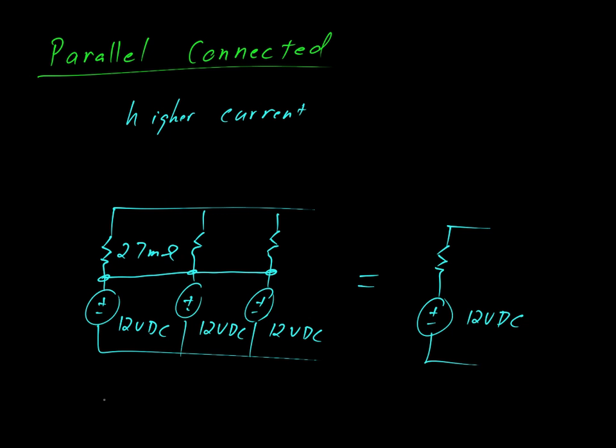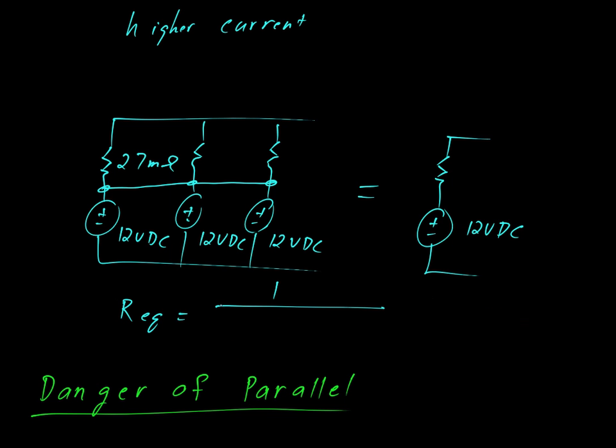Now we just need to figure out what that resistance is. So R_EQ is equal to 1 over, you'll recognize this is the formula for calculating parallel resistors. 1 over 27 milliohms plus 1 over 27 milliohms plus 1 over 27 milliohms. And when you do that, you'll end up with 9 milliohms.